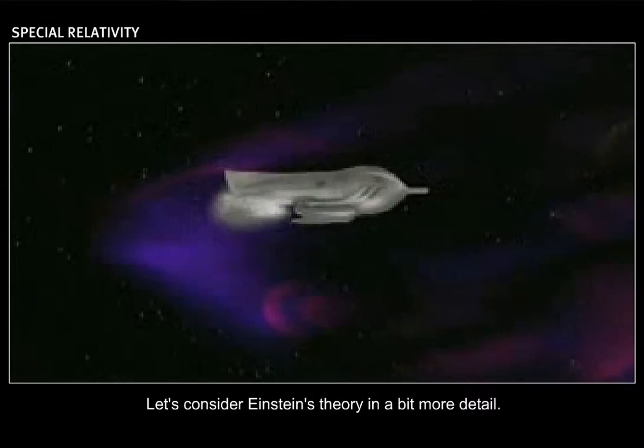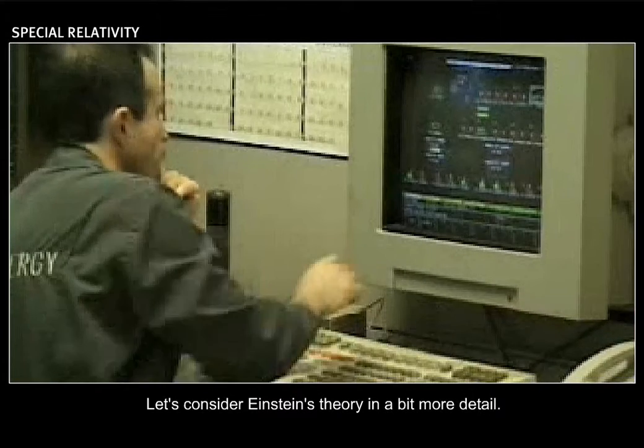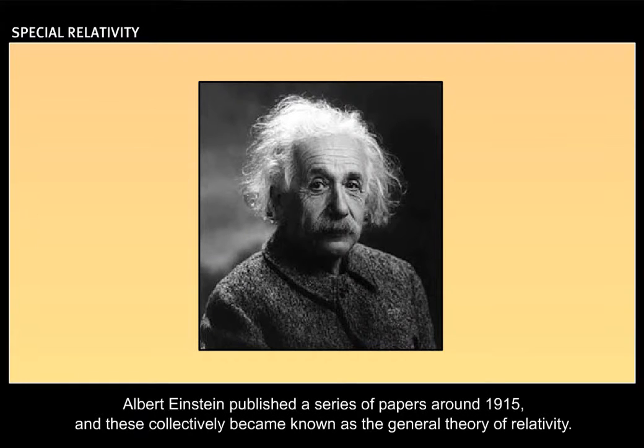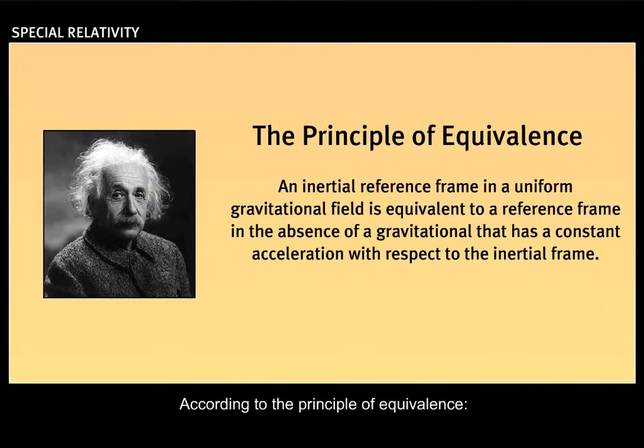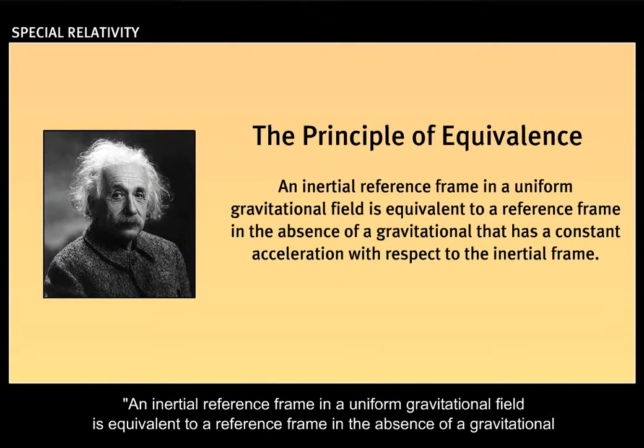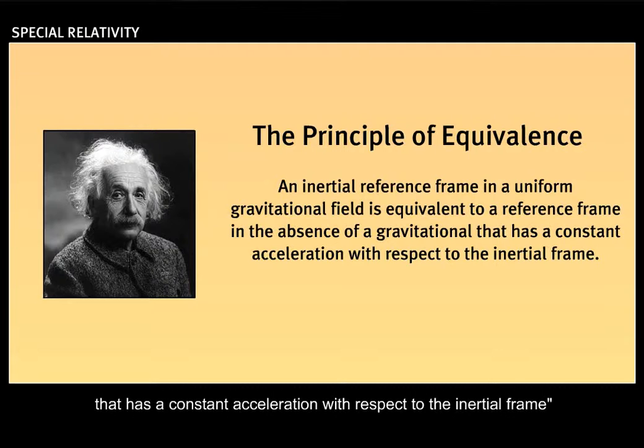Let's consider Einstein's theory in a bit more detail. Albert Einstein published a series of papers around 1915 and these collectively became known as the general theory of relativity. An important concept of his theory is the principle of equivalence. According to the principle of equivalence, an inertial reference frame in a uniform gravitational field is equivalent to a reference frame in the absence of a gravitational field that has a constant acceleration with respect to the inertial frame.